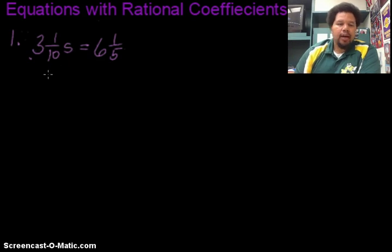We're going to do that by using the inverse operation. So here we have a number times this variable. This number happens to be a mixed number. It doesn't change our step though. Since this number is next to the variable, it is multiplication. So the opposite or the inverse of multiplication is division. So what we're going to do is go ahead and divide both sides by 3 and 1 tenth.